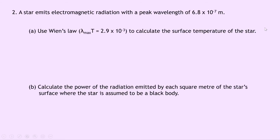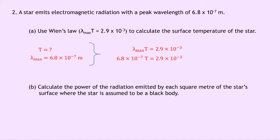Question 2 says a star emits electromagnetic radiation with a peak wavelength of 6.8 times 10 to the minus 7 meters. Part A says to use Wien's law, which is lambda max times T equals 2.9 times 10 to the minus 3, to calculate the surface temperature of the star. We know that lambda max is 6.8 times 10 to the minus 7 meters. Substituting in: 6.8 times 10 to the minus 7 times T equals 2.9 times 10 to the minus 3. Dividing both sides by 6.8 times 10 to the minus 7 gives us T equals 4265 Kelvin.